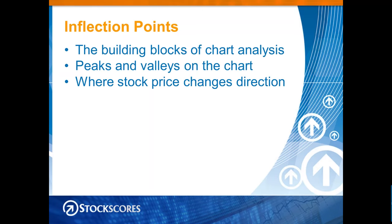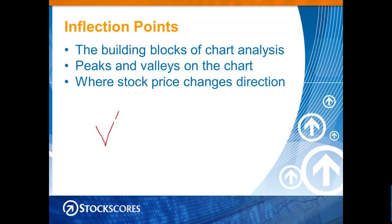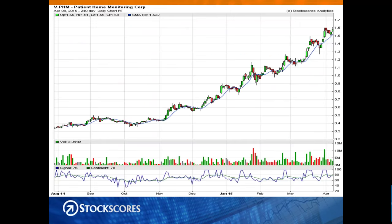It's kind of where control of the market changes. If sellers are aggressive and pushing price down, at some point they get tired — they get unmotivated to take a lower price, so price stops and starts going up. Then buyers push it higher until they say, 'We're paying too much,' and price starts going down. Those turning points on the chart are inflection points. Chart patterns are based on inflection points.